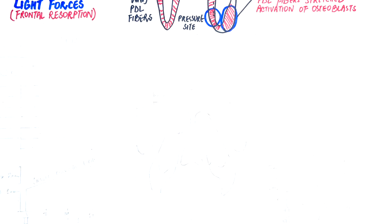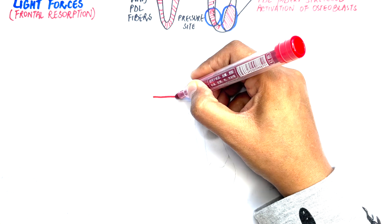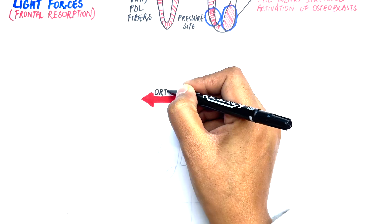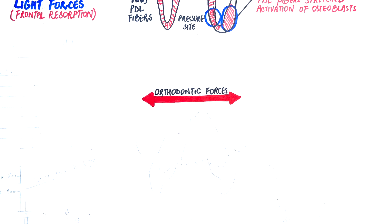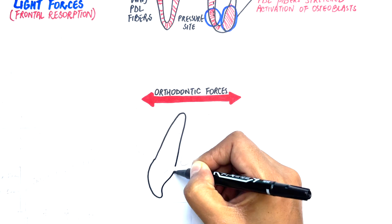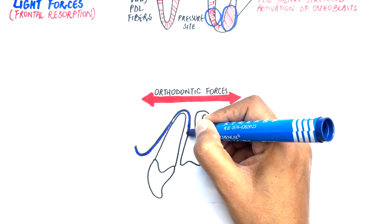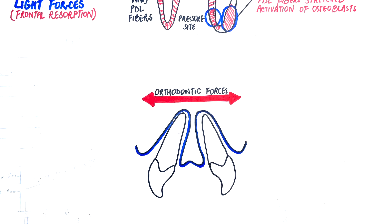For now, let's focus on the course of events after application of orthodontic forces in two different directions and look at what happens with heavy versus light forces. To define light and heavy orthodontic forces: a light orthodontic force is a force that causes compression of blood vessels at the pressure site, while a heavy orthodontic force is a force that completely occludes blood vessels on the pressure site. Let's draw diagrams of two teeth to look into light and heavy forces in two different directions for each tooth.